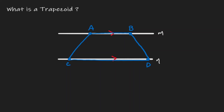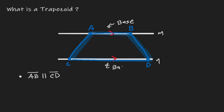Notice what we have done here. We have created a four-sided figure. What's so special about this four-sided figure? Notice that there are two line segments that are parallel to each other. Those segments that are parallel to each other, we are going to label them as the bases of the trapezoid. Now for the line segments on the left and right-hand side — which in this case are AC and BD — we call them the legs of the trapezoid.